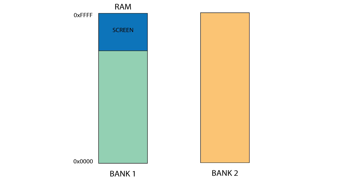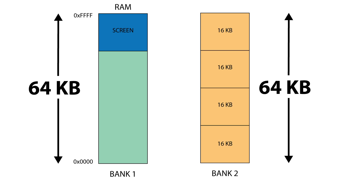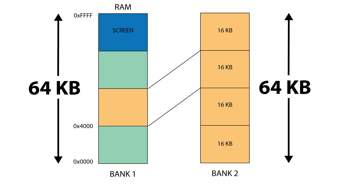Let's have a quick look at how the memory banks work on the Amstrad CPC-6128. The Z80 can address only 64 kilobytes at a time, which is 16 bits of address space. By default, those 64k are the lower bank of the Amstrad. The second bank of 64k can be broken down into four blocks of 16 kilobytes each. The Amstrad can map any of those blocks in the addressing space between 4000 and 8000.